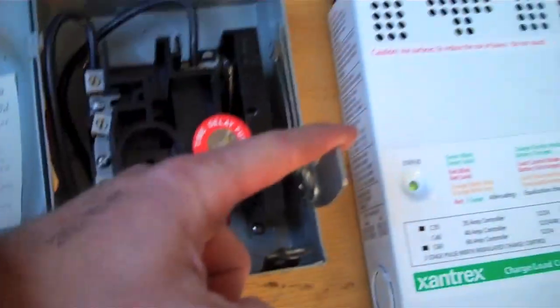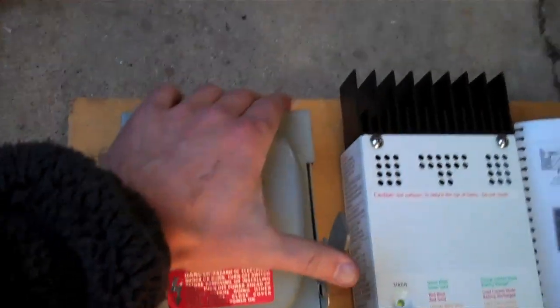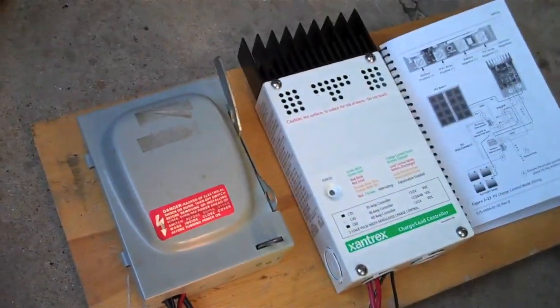So by having this lever down, the panel is disconnected. And what we have to do is close it up and flip that switch, and now the PV is connected.